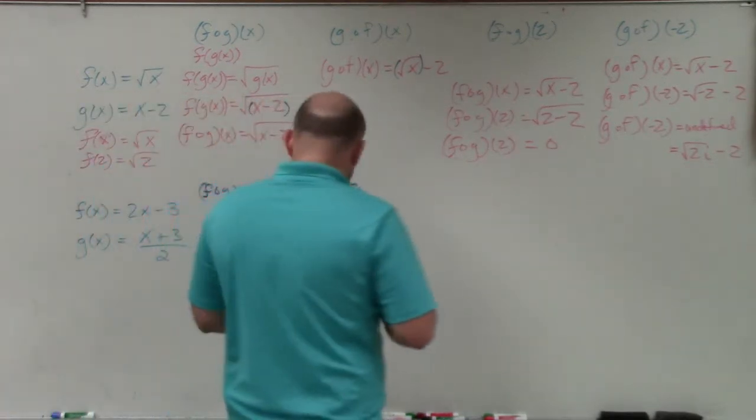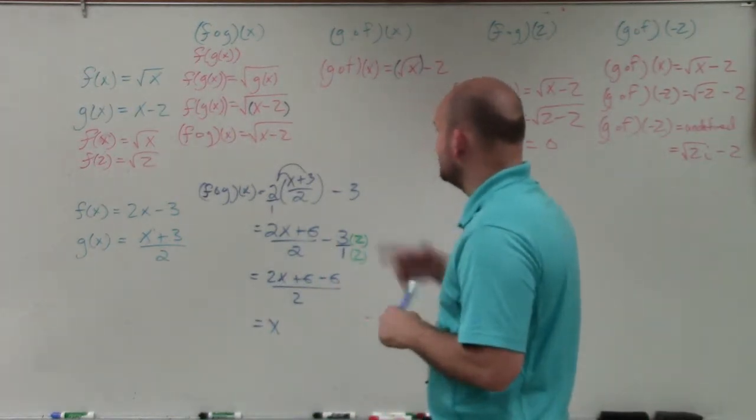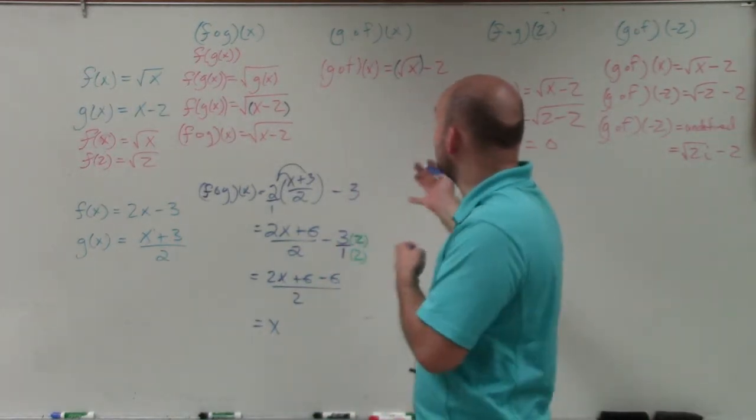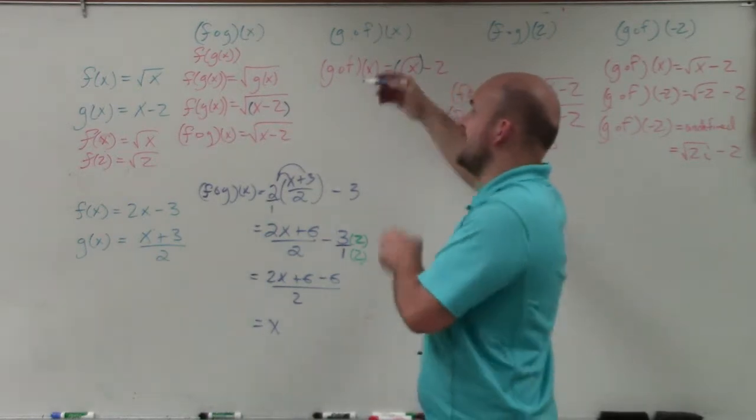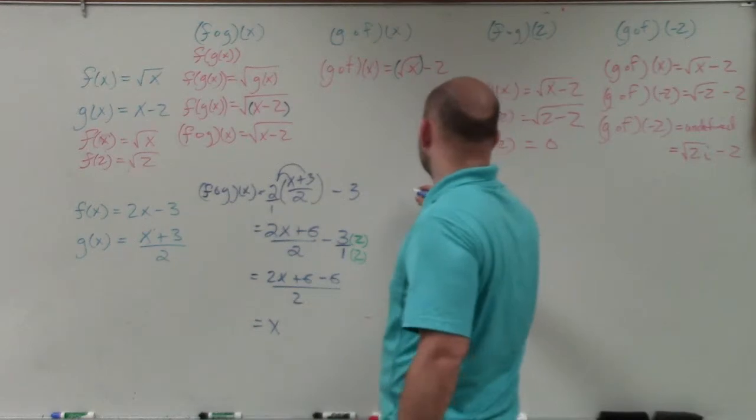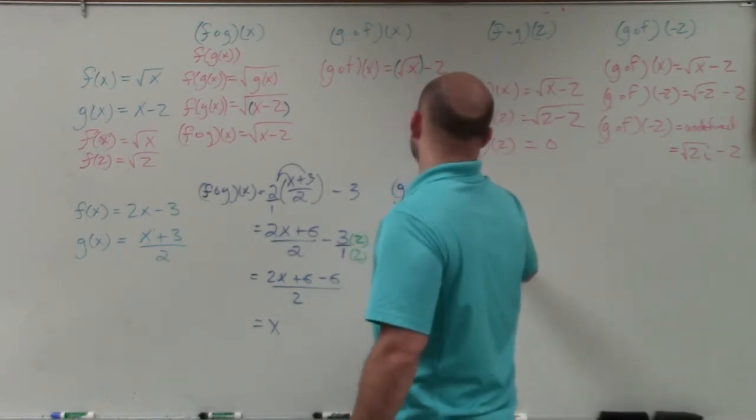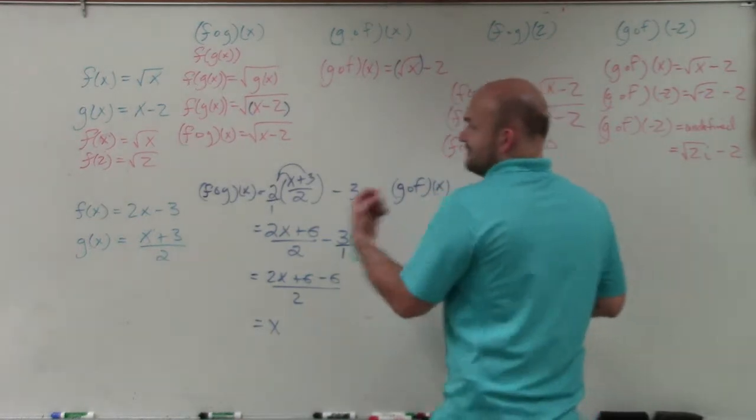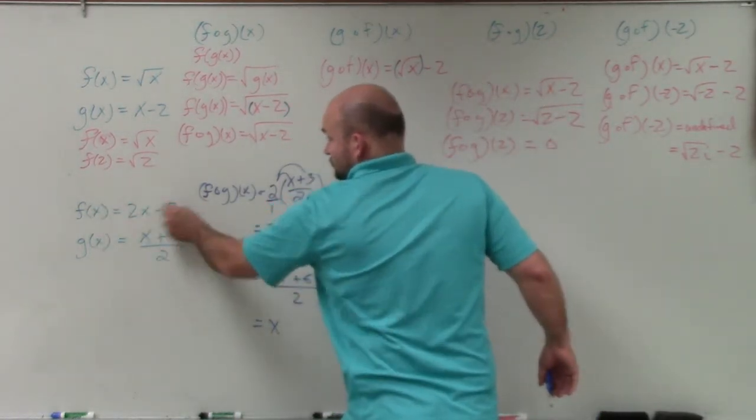So now let's go ahead and do the g of x function into the f of x function. Wait a minute, did I do that wrong? g of x into f of x. Yeah, so now it's going to be the f of x into the g of x. Okay, I'm right. So therefore, we have g of f of x. Now, wherever I have an x in my g of x function, I'm going to plug in f of x. Well, f of x is equal to 2x minus 3. So this example is going to look like this.